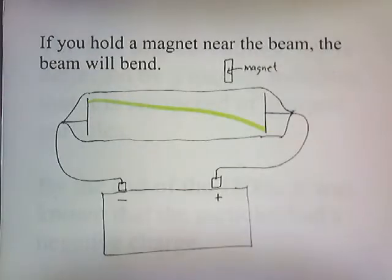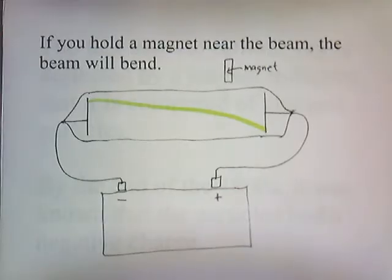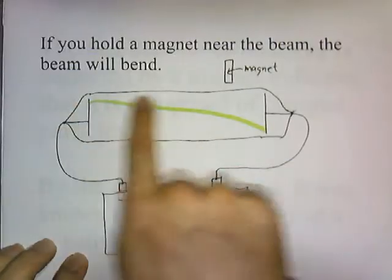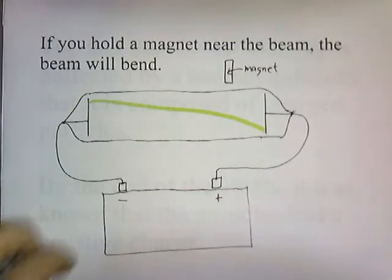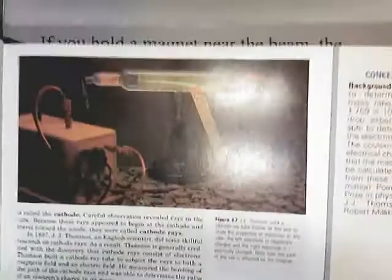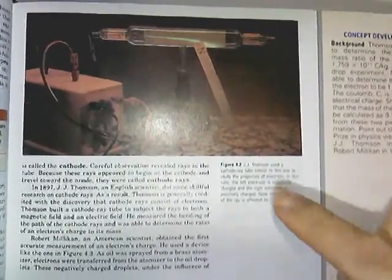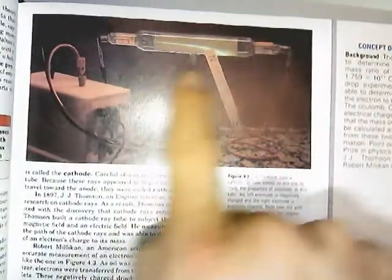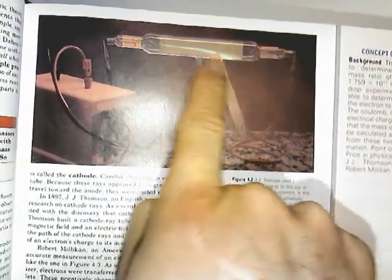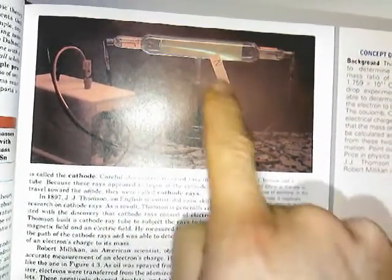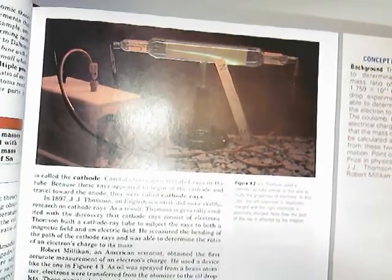What's interesting about the cathode ray is that if you hold a magnet near the beam, the beam will bend. So if you hold a magnet close to the beam, instead of just going straight across, it bends downward. Here's a picture of an actual cathode ray bending — you can see a magnet being held near the cathode ray tube, and the little green beam is not going straight across; it's bending downward. So a magnetic field influences the beam.